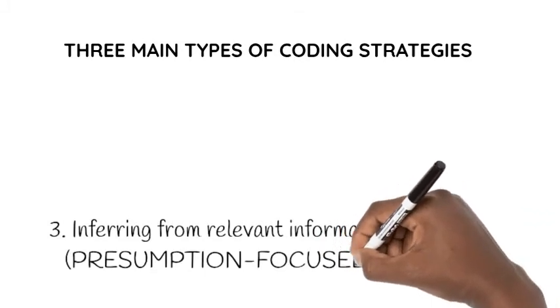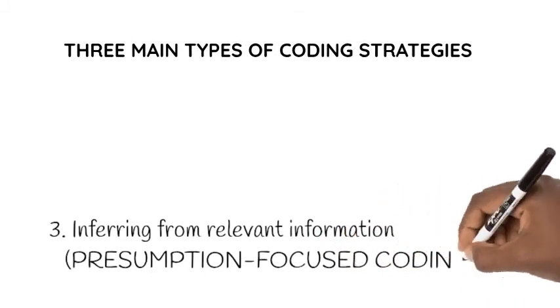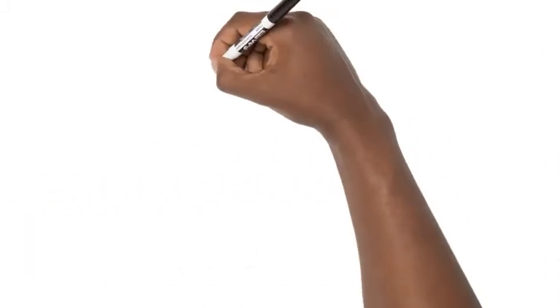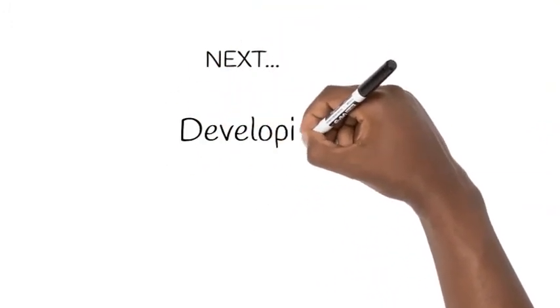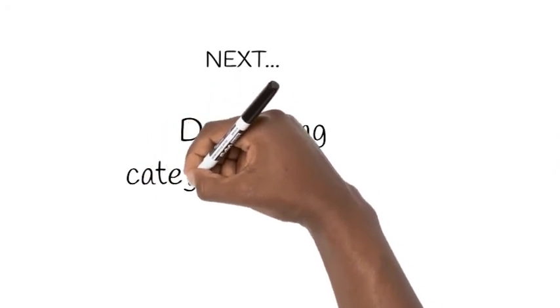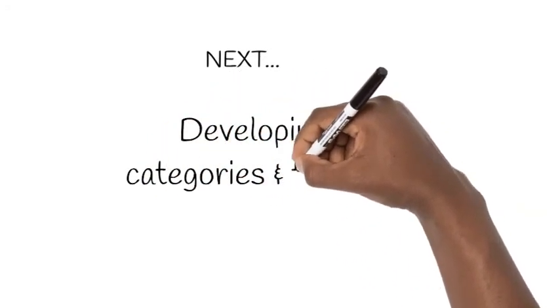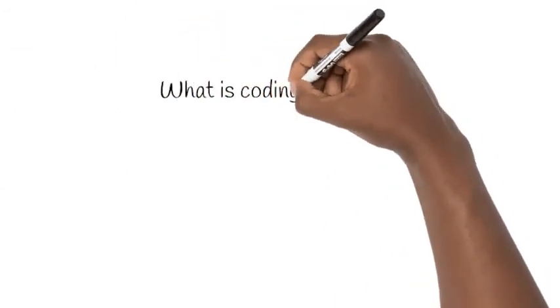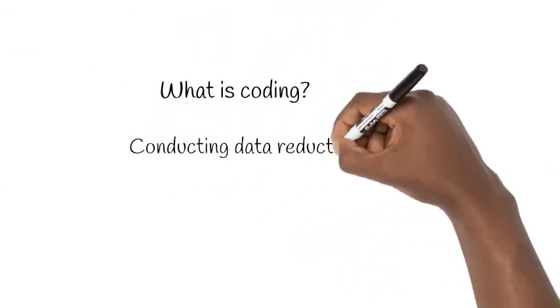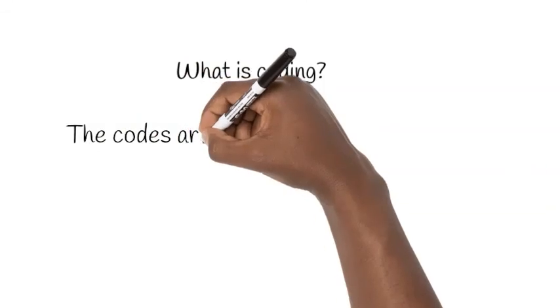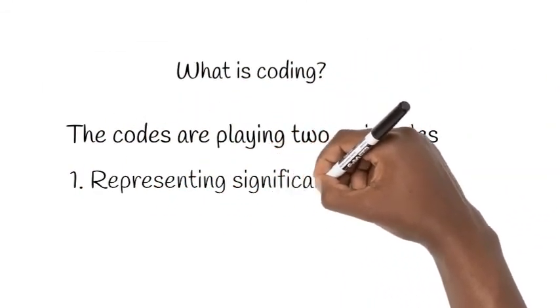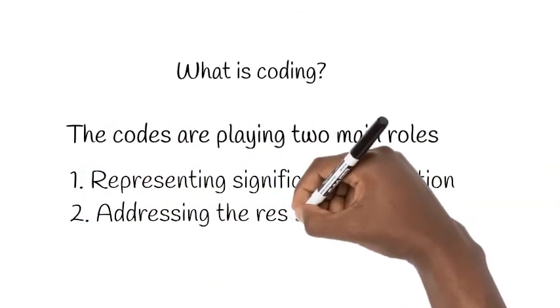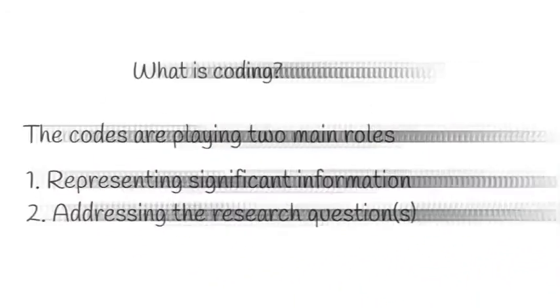This is all about coding. After you have developed your codes, you move on to the next stage where you come up with categories and themes. This is just a basic understanding of coding. As I said, coding is all about trying to reduce data, but your summary should represent the significant information that you have identified in the data while at the same time addressing your research question.